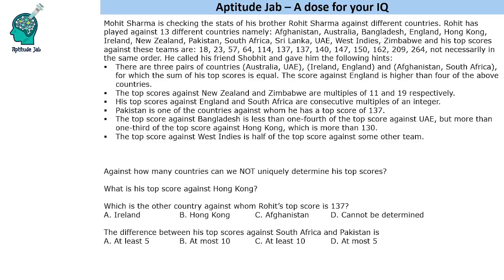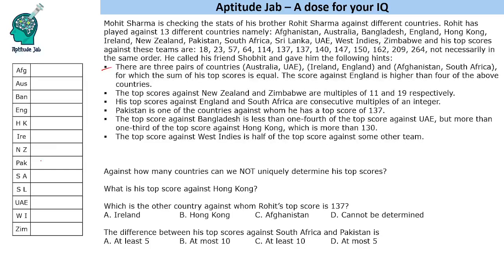So if we see this information, some conditions can be filled directly while others have multiple possibilities. Pakistan is one of the countries against whom he has a top score of 137. So we can fill a table — Pakistan gets 137.